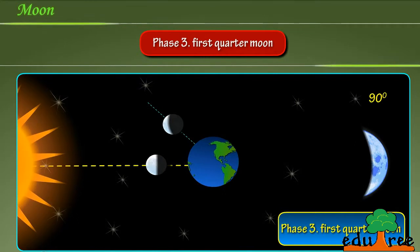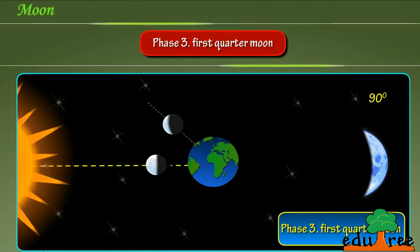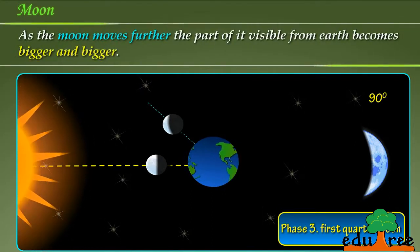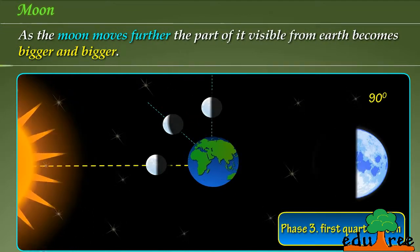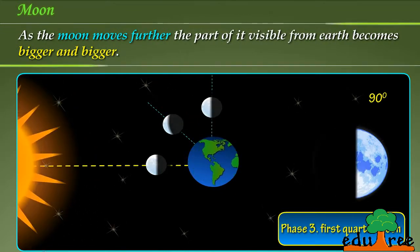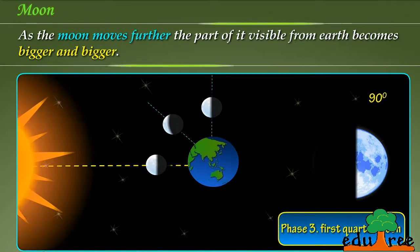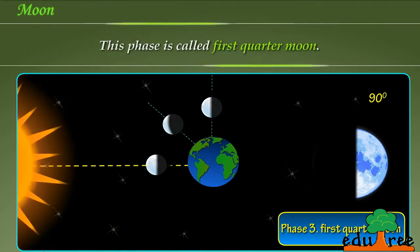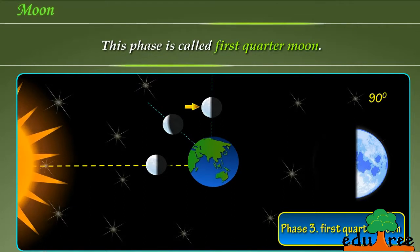Phase 3: First quarter moon. As the moon moves further, the part of it visible from earth becomes bigger and bigger. This phase is called first quarter moon.